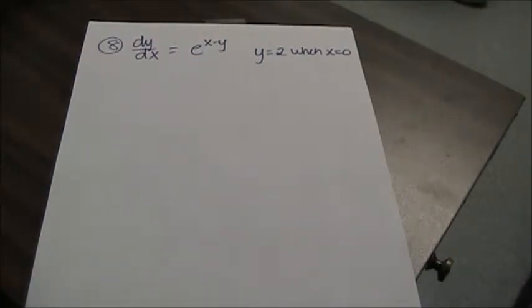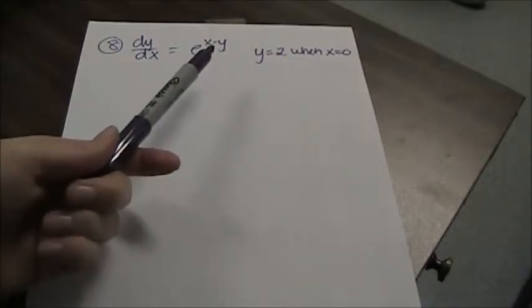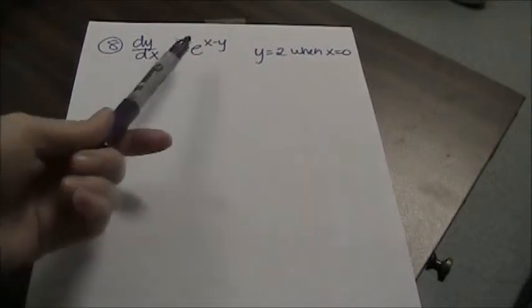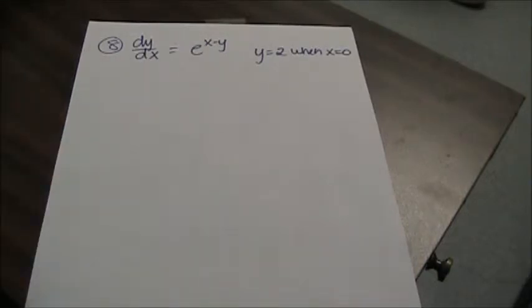This is like the one I showed you in class where you have to remember your exponent rules. So when you add exponents, that means you multiply like bases. When you're subtracting exponents, that means you are dividing like bases.